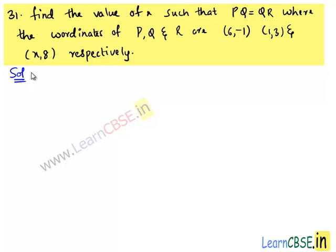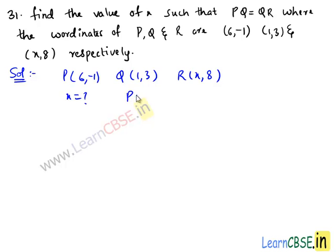Moving on to the solution. In this question, three points are given which are P(6,-1), Q(1,3) and R(x,8), and we need to find the value of x for which PQ equals QR.